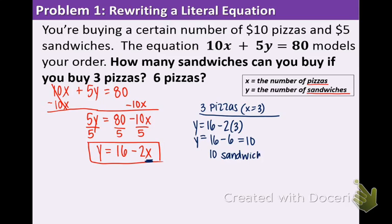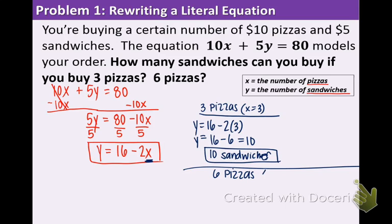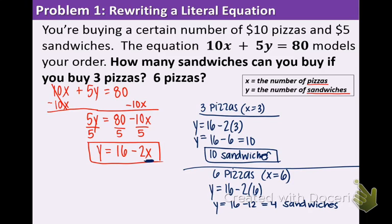We're limited because you only have an $80 order and you don't want to spend more than $80. Now for the second case, we have 6 pizzas, so x equals 6. Plugging 6 into the same equation: y equals 16 minus 2 times 6. 2 times 6 is 12, so y equals 16 minus 12, which equals 4. So 4 sandwiches can be bought when you have 6 pizzas. As you can see, when you buy more pizzas you can buy fewer sandwiches.